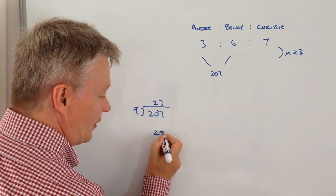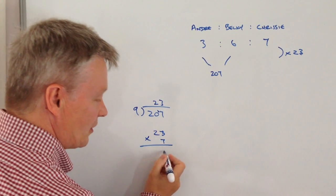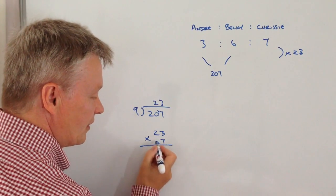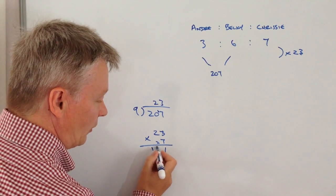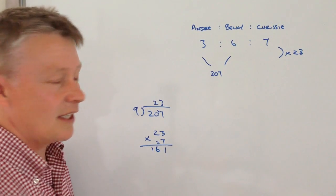And if I pop that either into my calculator or do a quick calculation at the side there, what I'm going to find is that Chrissy will actually get £161.